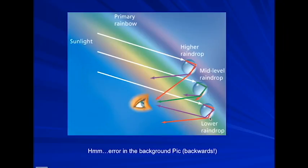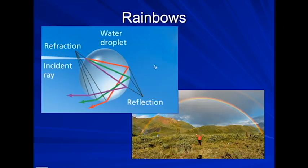What's kind of funny is this graphic is correct, but the picture in the background is actually drawn backwards. If we go back to our original picture, we can see indeed that the red is on the top and the violet on the bottom.